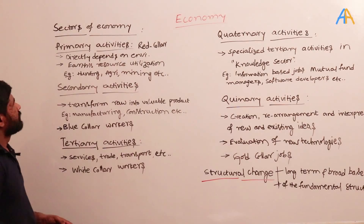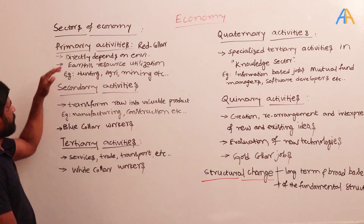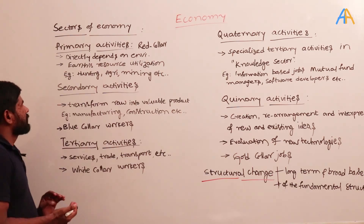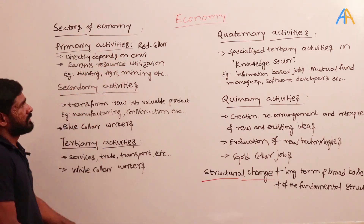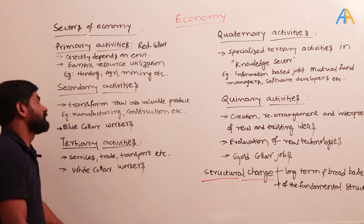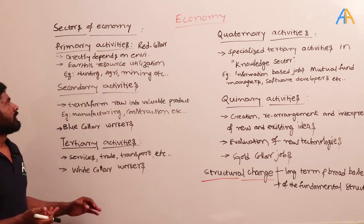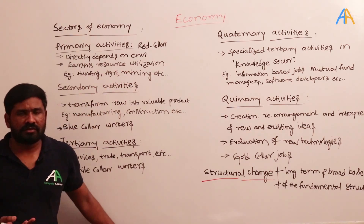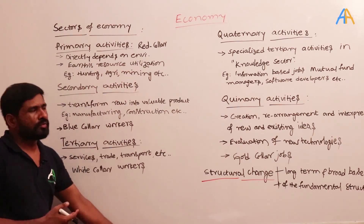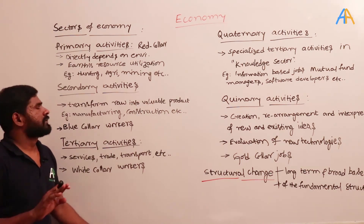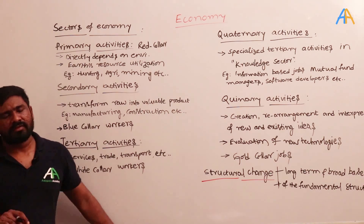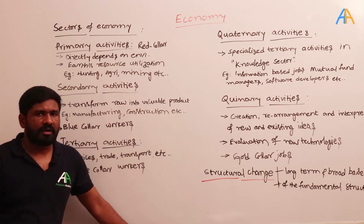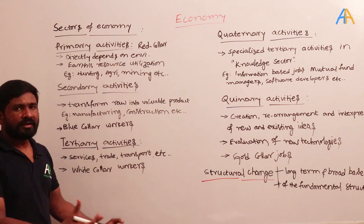We will see quickly the different sectors of the economy. Primary activities are also called red color workers. These directly depend on the environment — by utilizing natural resources, if you do some activities, it is called primary activities. Examples include hunting, agriculture, mining, and quarrying — all of these directly use natural resources.